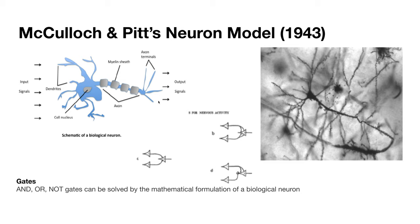These axon terminals are also connected to other neurons. For a long time people were thinking whether neurons are tightly connected, but actually they are connected through something we call the synapse, where the output goes into the synapse and then the other neurons read from that. Now let's see how we could use this neuron model that McCulloch and Pitts introduced to solve a simple problem, like AND, OR, and NOT gates.